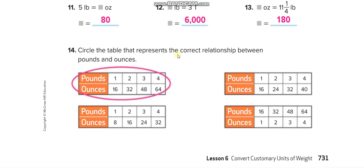Circle the table that represents the correct relationship between pounds and ounces. The second table is wrong — 1 pound is 16 ounces, but it shows 2 pounds as 24 instead of 32 (2 times 16). Another table has it reversed, showing 1 ounce equals 16 pounds, which is incorrect. The first table is the correct one.